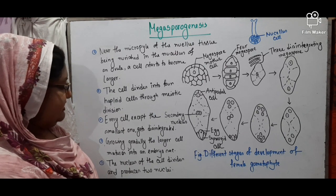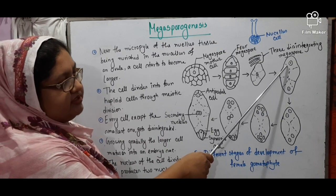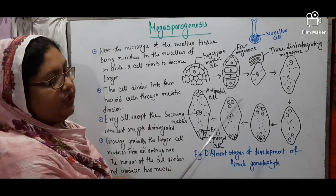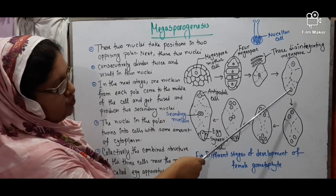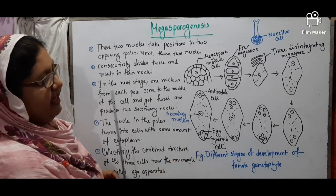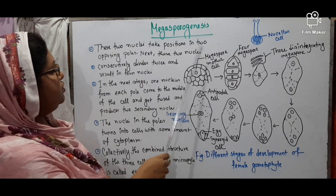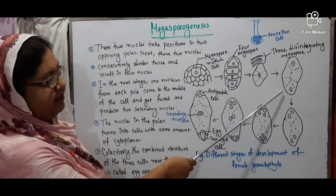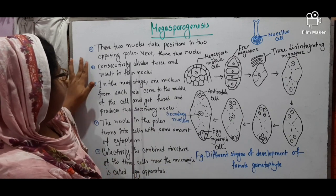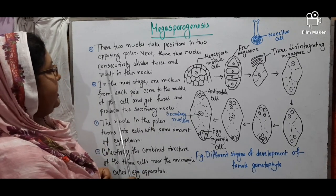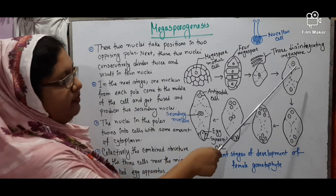The nucleus of this cell divides by mitosis and produces two nuclei which go to two opposite poles. These two nuclei then consecutively divide twice, resulting in four nuclei at each pole.